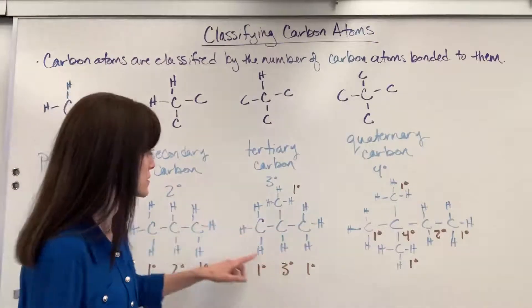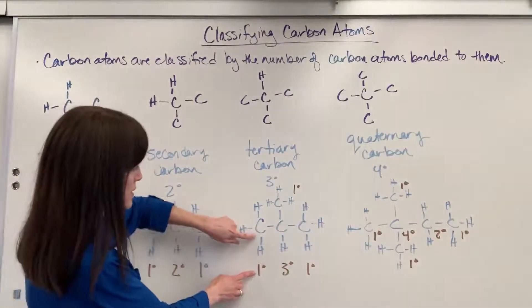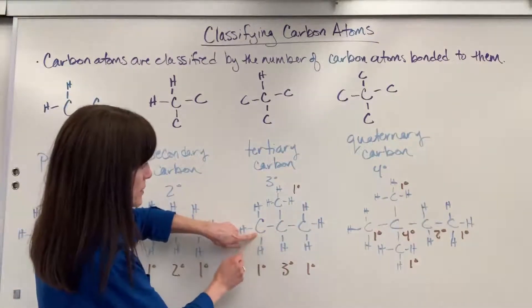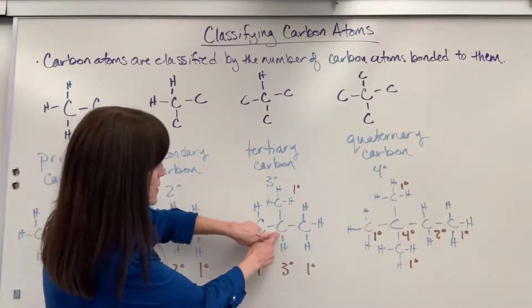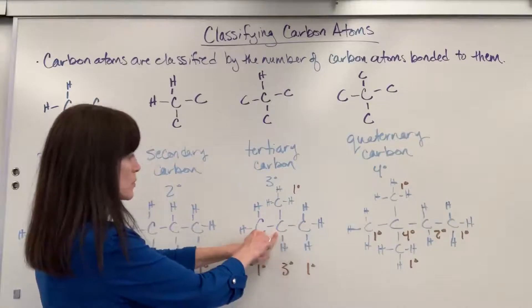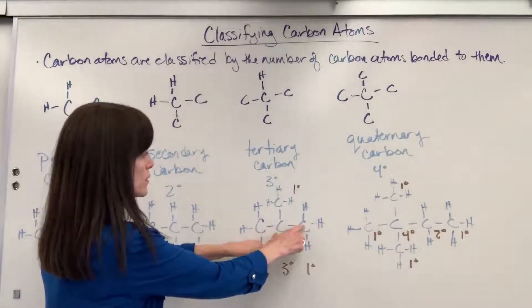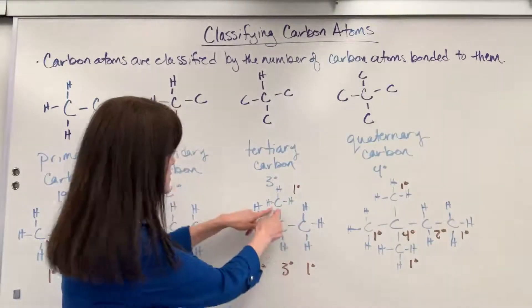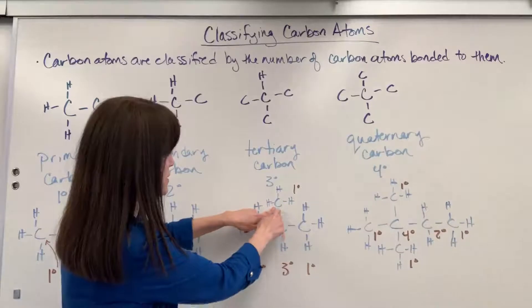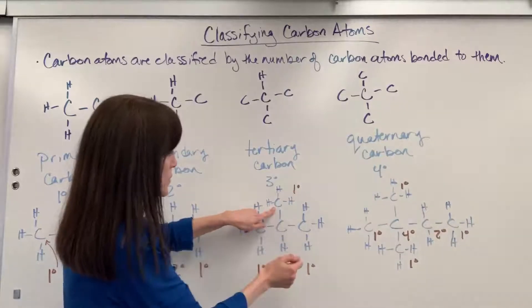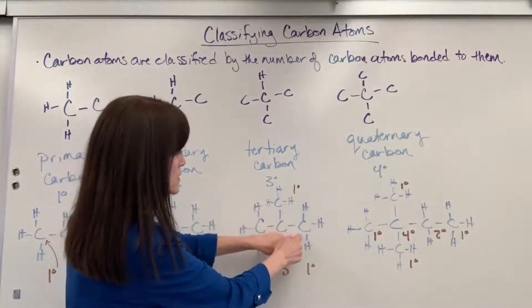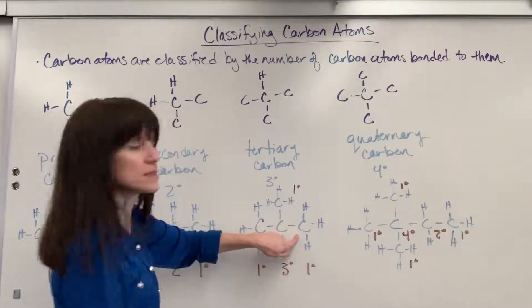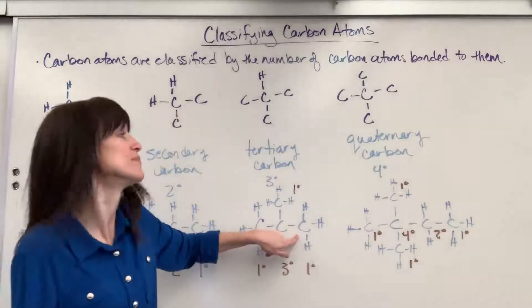Let's look at this. This carbon is primary because it's bonded to one carbon. And then look at this carbon — it's bonded to one, two, three carbons. That is tertiary. This carbon up here bonded to one carbon is primary, and then this carbon bonded to one carbon is also primary.